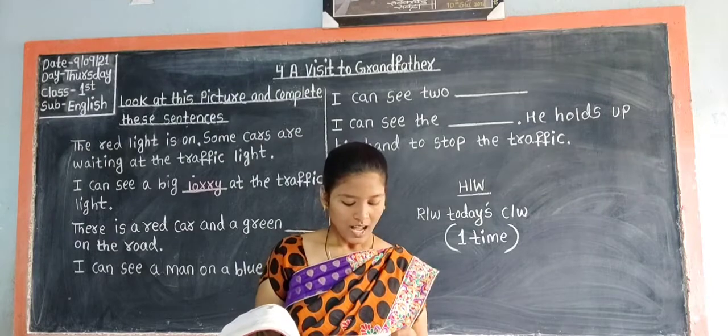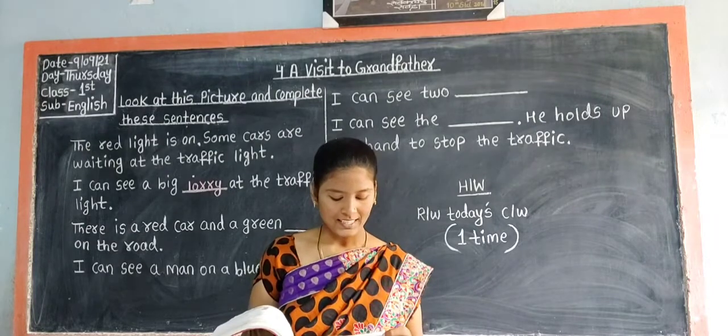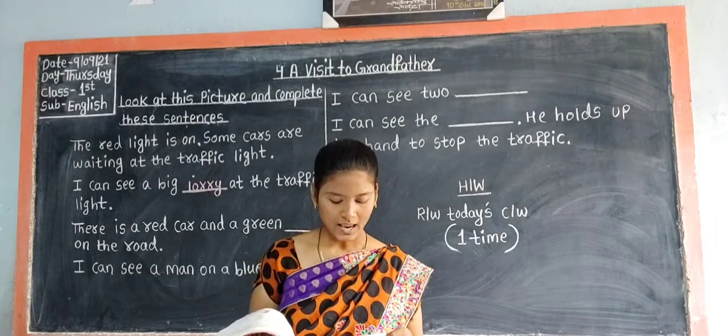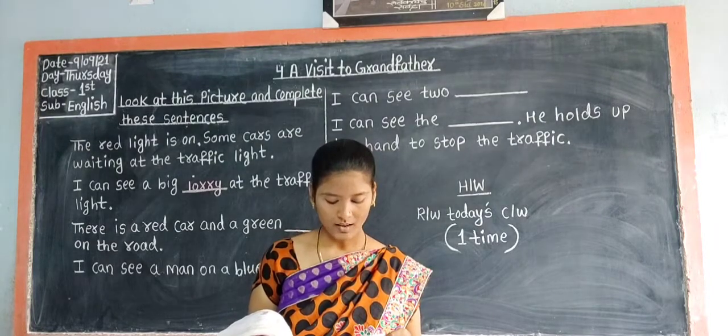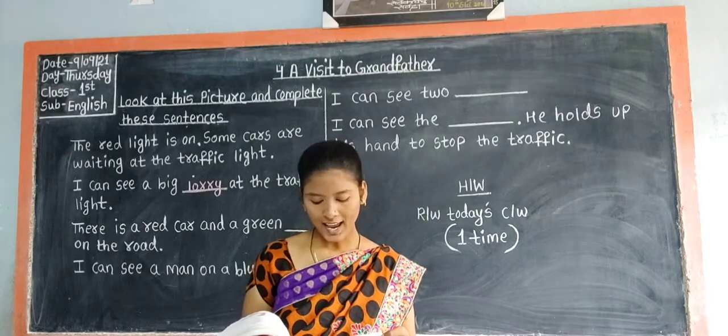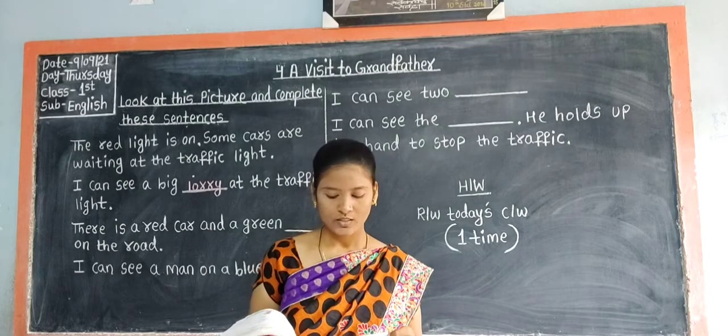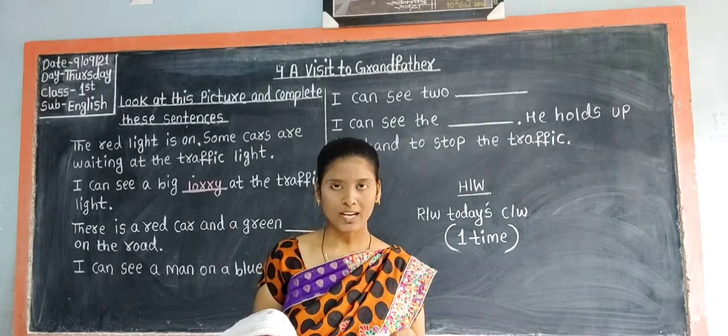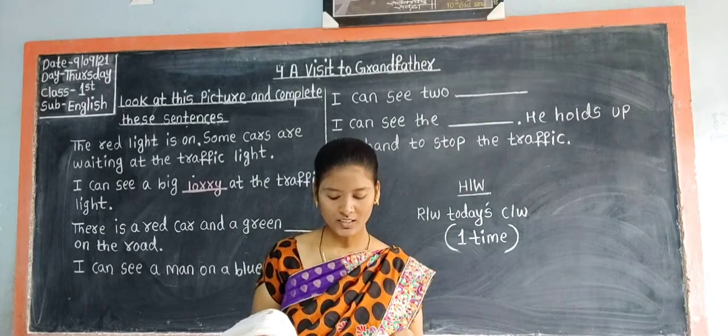Third sentence: 'I can see a man on a blue ___.' So write the answer in the blank.